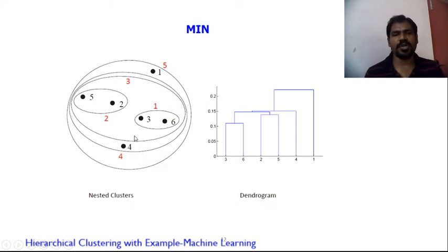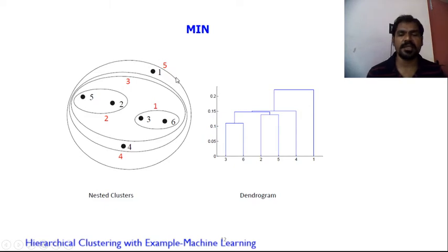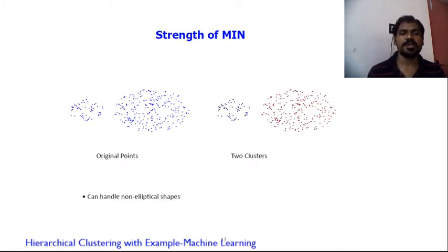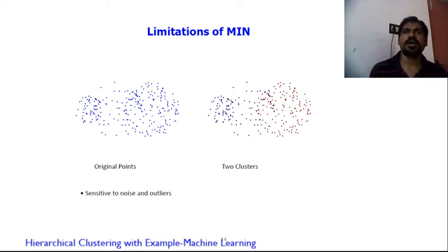With single link, nested clusters form iteratively — for example, 3 and 6 merge into one cluster, then 5 and 2 into another, then both merge into a third, then 4 is added, and finally 1 is merged, giving one large cluster of 5. This is shown pictorially using the dendrogram. The strength of single link is it can handle non-elliptical shapes, but it may be sensitive to noise and outliers.